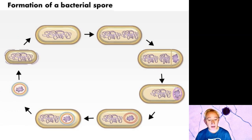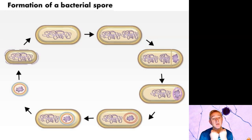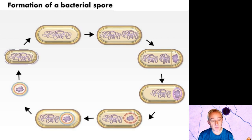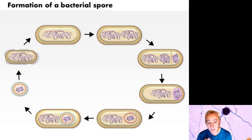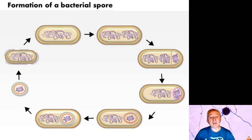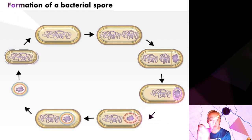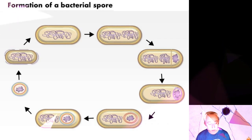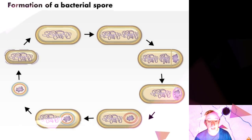Here on the slide we have the process of forming endospores — a portion of the bacterium becomes the spore. At some point, when conditions are favorable, the spore will germinate back into a vegetative bacterial cell. This cycle of spore to vegetative cell and back to spore can theoretically carry on indefinitely.